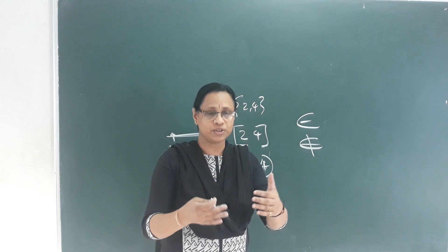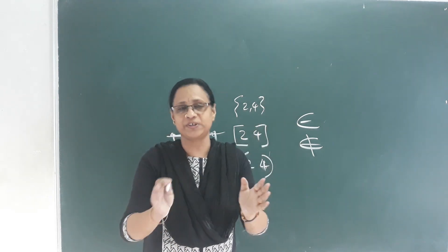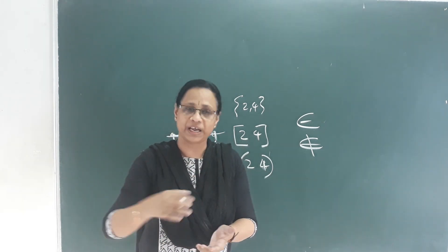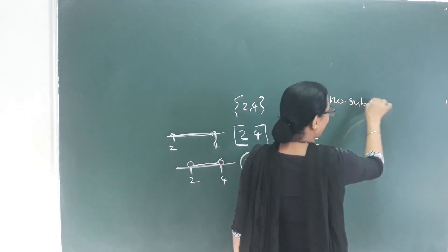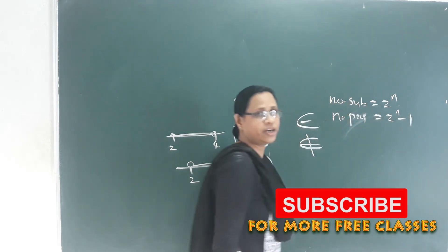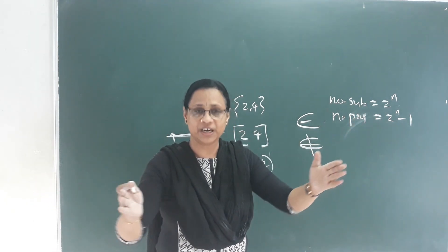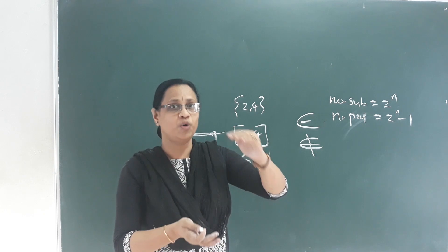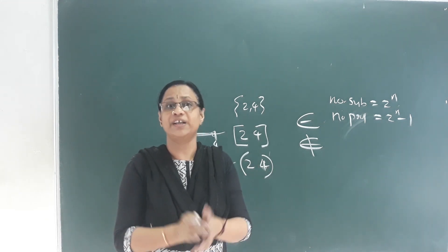What is a subset? When one set is a subset of another set, the other set is called a superset. If one set is a subset of another, the formula for the number of subsets is 2 raised to n. The number of proper subsets is 2 raised to n minus 1. The collection of all subsets is called the Power Set. All subsets together form the Universal Set.